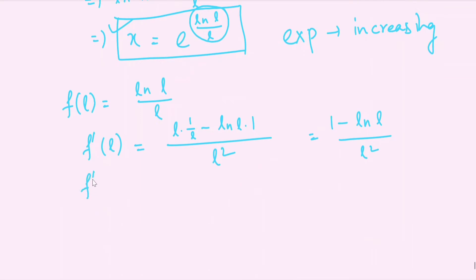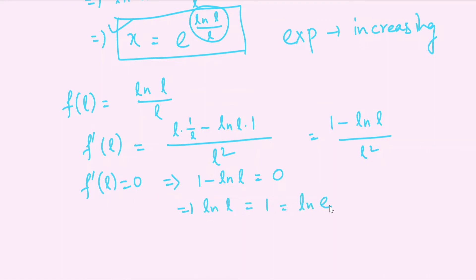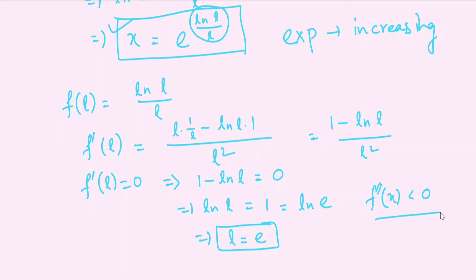Setting f'(L) = 0 gives 1 − ln(L) = 0, so ln(L) = 1 = ln(e), which implies L = e. We check f''(L) < 0 at L = e to confirm this is a maximum.